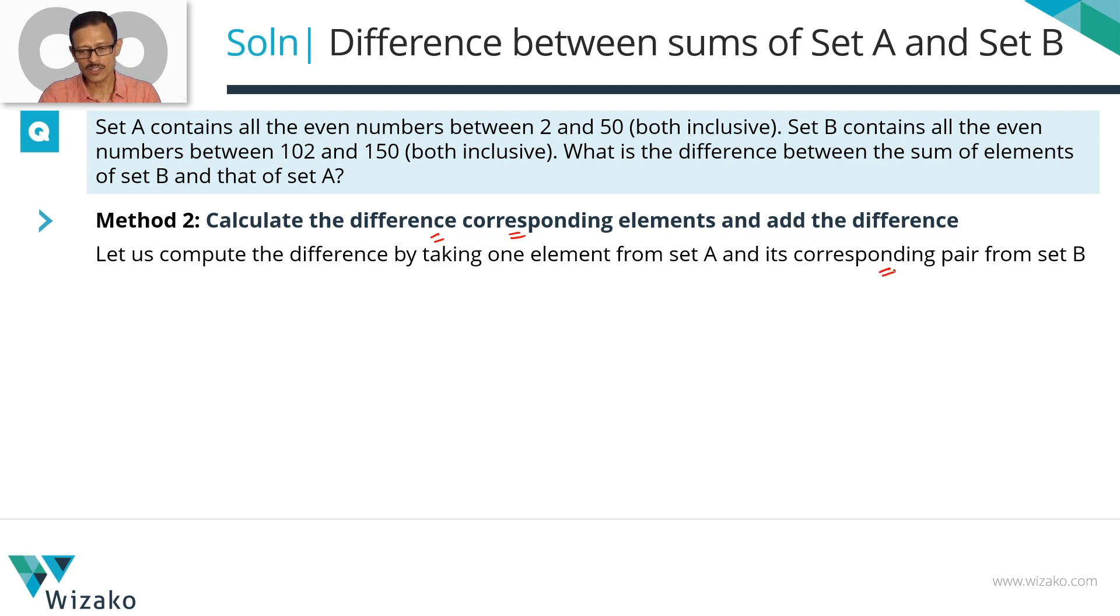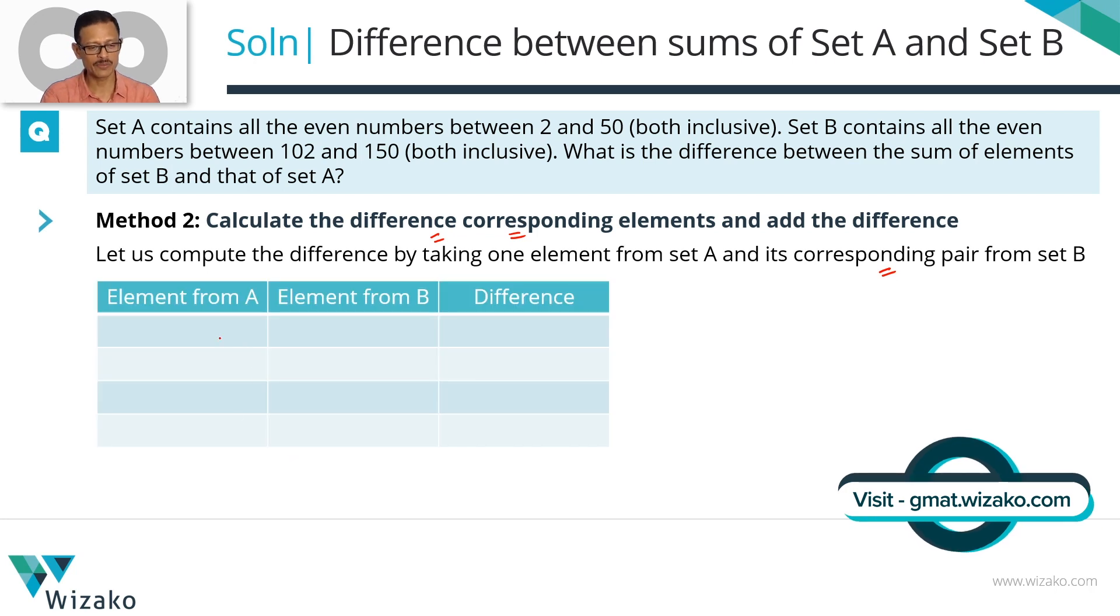I'm going to pick one element from set A. I'm going to pick what I call as a corresponding pair from set B. Both these sets, let's say, we're writing them in ascending order. 2, 4, 6, 8, all the way up to 50. Set B, 102, 104, 106, all the way up to 150. If I pick the first element from set A, I'm picking the first element from set A, which is 2. The first element from set B, that's a corresponding element, is what I call. The difference between these two equals 100.